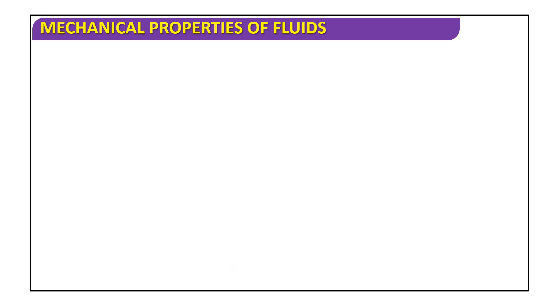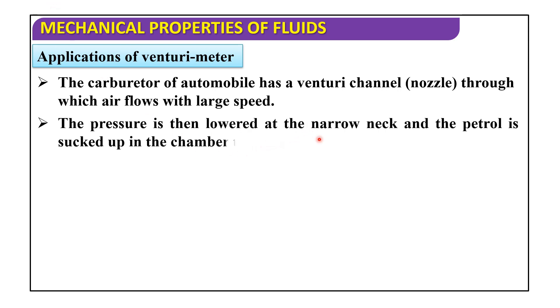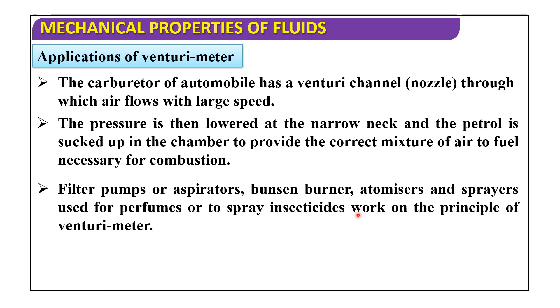Now, we will discuss applications of Venturi meter. First one, the carburetor of automobile has a Venturi channel, that is nozzle, through which air flows with larger speed. The pressure is then lowered at the narrow neck and the petrol is sucked up in the chamber to provide the correct mixture of air to fuel necessary for combustion. Filter pumps or aspirator, Bunsen burner, atomizer and sprayers used for perfumes or to spray insecticides work on the principle of this Venturi meter.